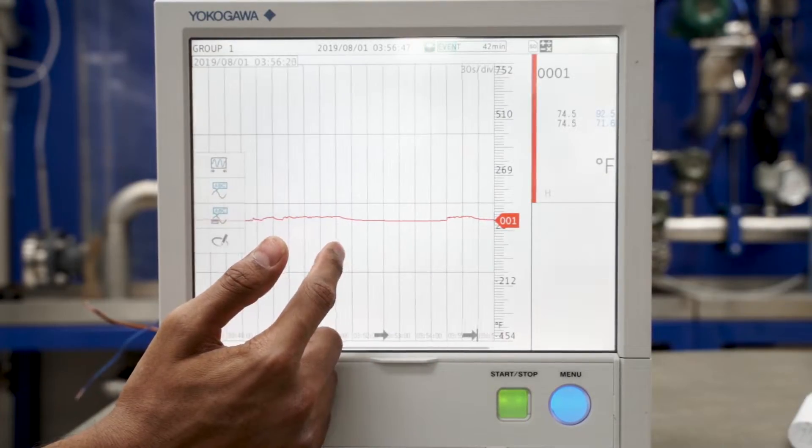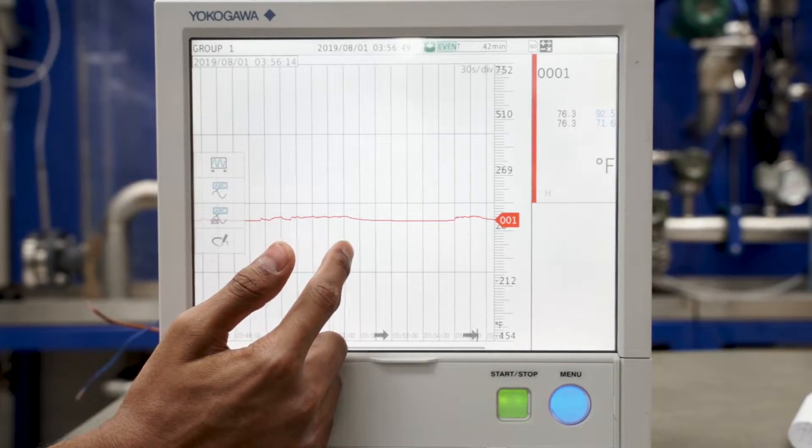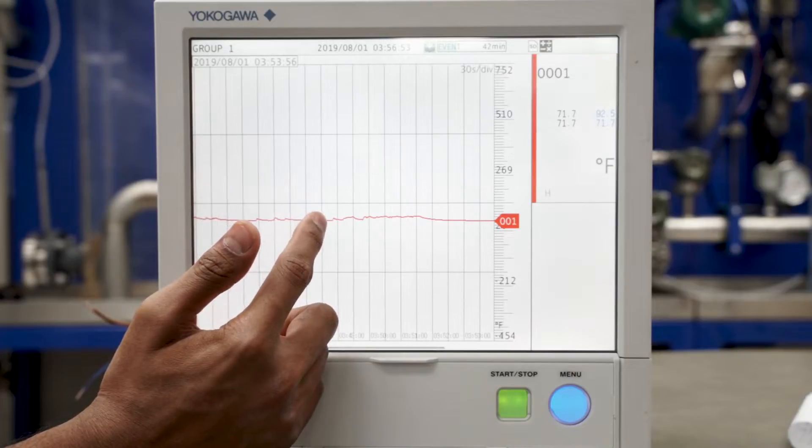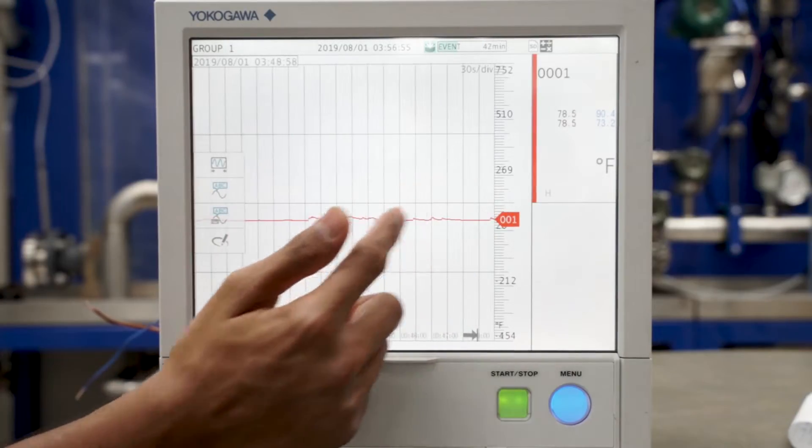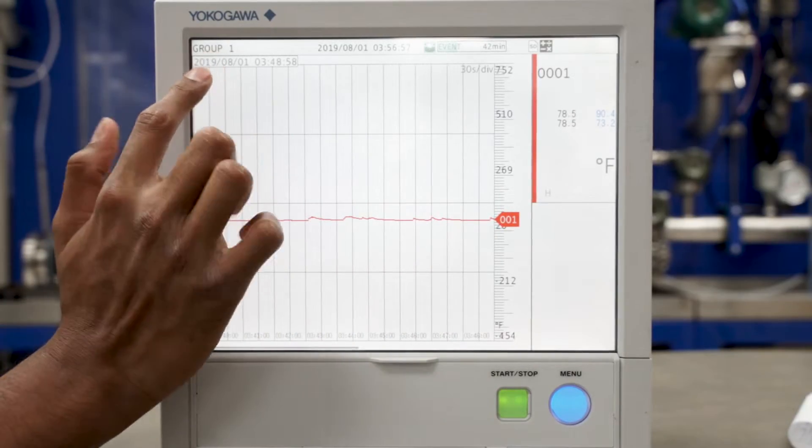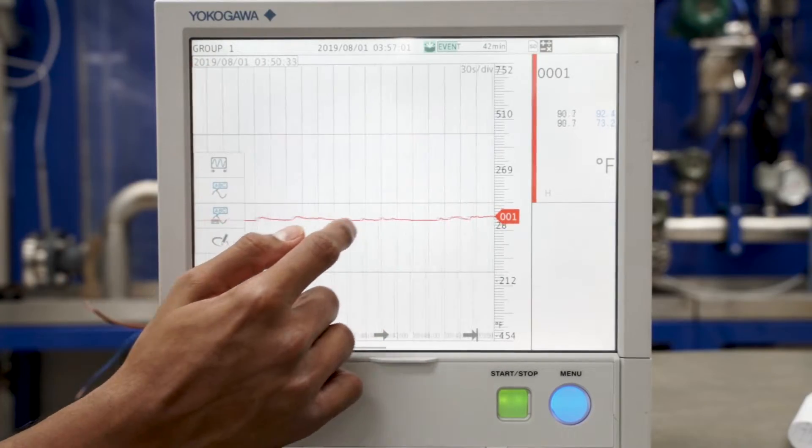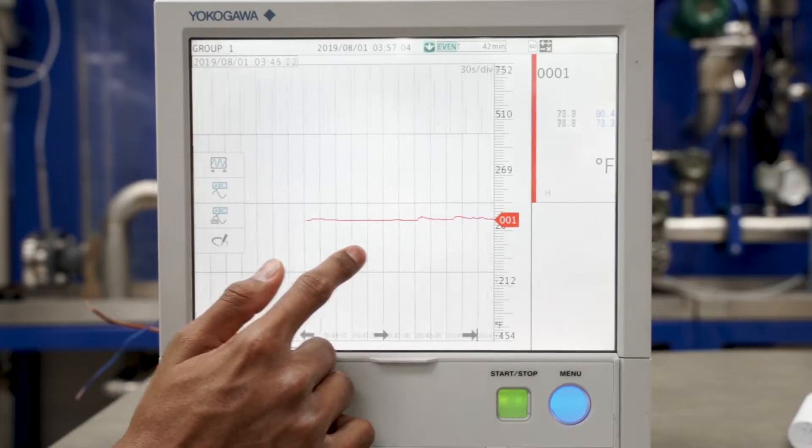One of the features of the trend graph of the GX allows the user to seamlessly scroll to the recent trend history by simply swiping the trend to the right as such. Here you will see a date and time stamp that will allow you to keep track of where in the historical records you currently are.